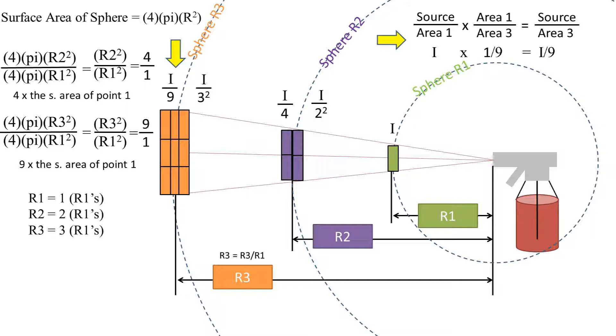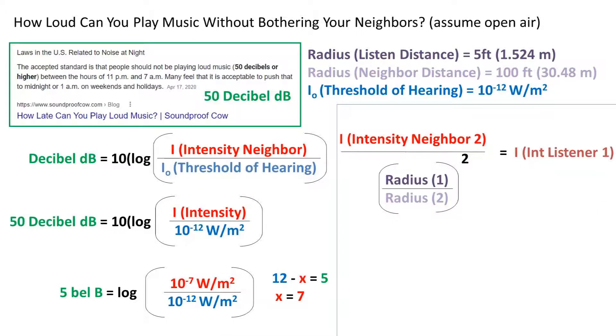Intensity over the radius squared. Doing some rearranging, we get that the intensity at the listening condition, which is radius 1 condition, is equal to the intensity at the neighbor's location, divided by the radius of the listener divided by the radius of the neighbor, squared.